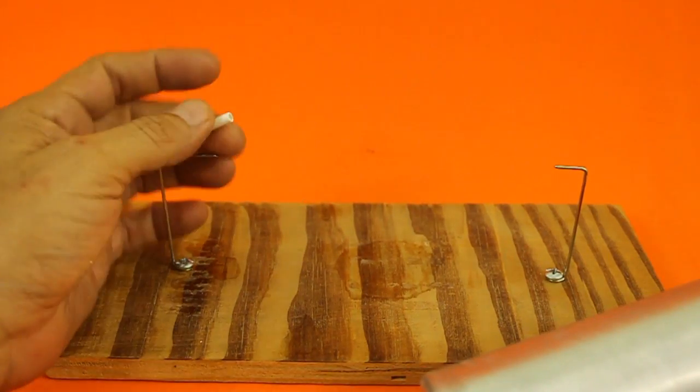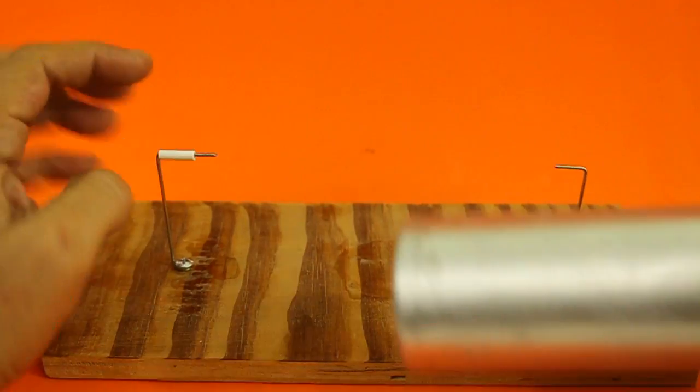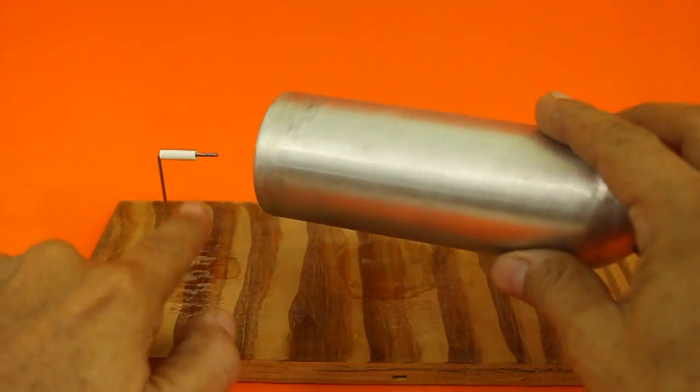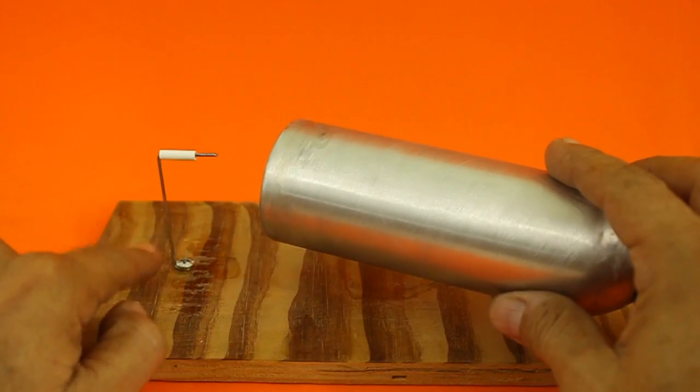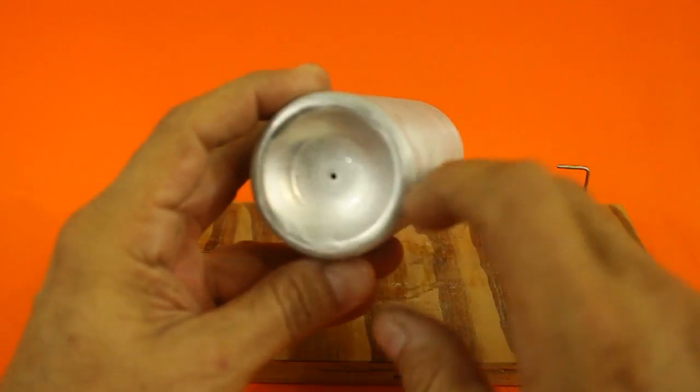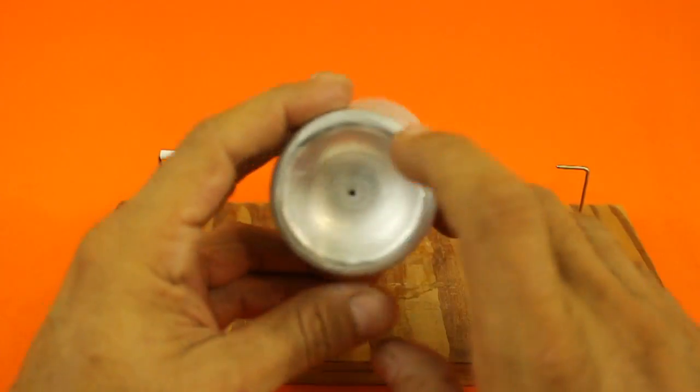This is just a plastic tube that I use as a spacer so that the can does not collide with the wire. Obviously you have to make a little hole at the center of the base.